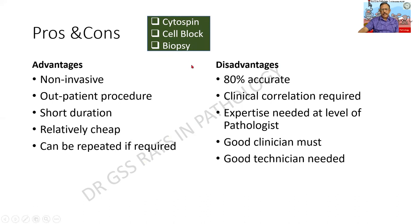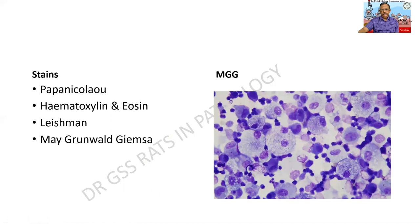I would like you to write a good answer on cytology. It can be FNAC, which is a question, or it can be exfoliative cytology — you will have to write both. What are all the stains that can be done? The Papanicolaou stain, H&E, Leishman stain, May-Grünwald-Giemsa. This is one of the Romanovsky stains that has been used to stain the cells.